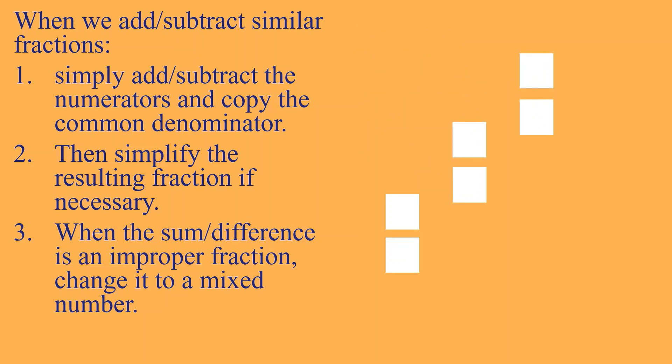Next, sa subtraction naman tayo. Magtry ulit. We have 18 over 15 minus 6 over 15. So, kagaya ng dating ginagawa. Subtract the numerator. 18 minus 6 is equal to 12. And then, copy the denominator, 15. So, kung titignan natin yung 12 at saka 15, meron pa silang tinatawag na common factor. Pwedeng pang-divide sa kanilang dalawa na walang remainder. Kaya, we need to simplify our answer.